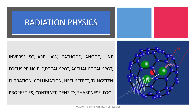Next is radiation physics. Under radiation physics, you should know about the inverse square law, the constituents of the cathode and anode — the entire X-ray tube — tungsten rod, tungsten filament, copper stem, molybdenum focusing cup. Then the line focus principle, focal spot and actual focal spot measurements, filtration, collimation, heel effect, and the properties of tungsten. Then contrast, density, sharpness, and fog — how to increase or decrease sharpness, density, and contrast, what fog is, and the basics of milliampere and KVP.